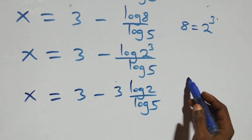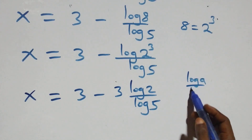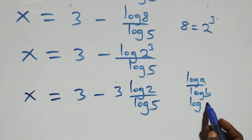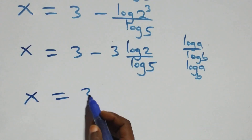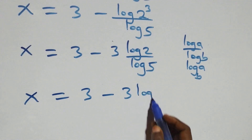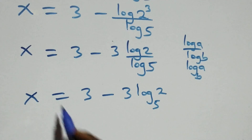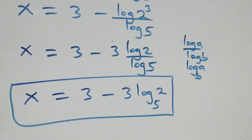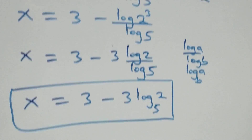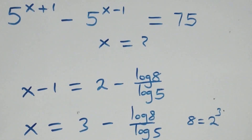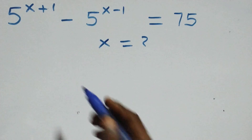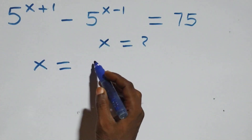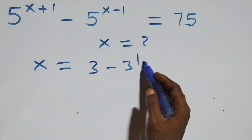Applying the change of base formula, log 2 over log 5 becomes log base 5 of 2. Therefore x equals 3 minus 3 log base 5 of 2. We now verify this satisfies the original equation by substituting x equals 3 minus 3 log base 5 of 2.